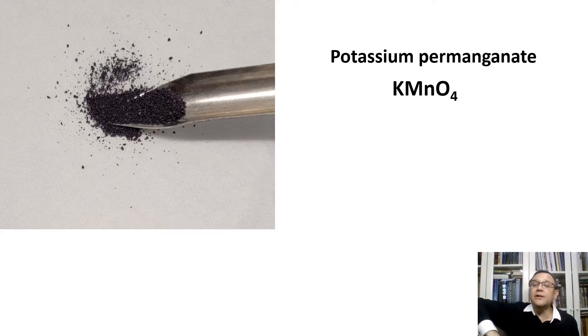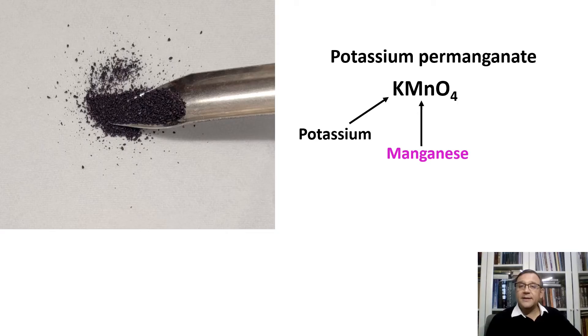Potassium permanganate crystals are made up of potassium, manganese, and oxygen, all of them arranged in a specific structure.